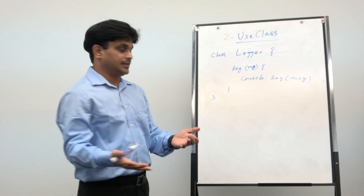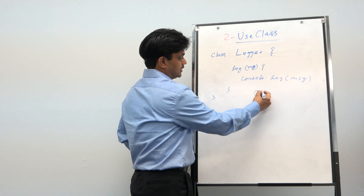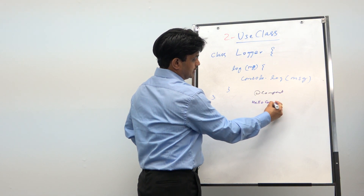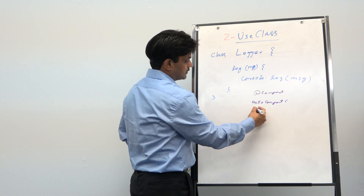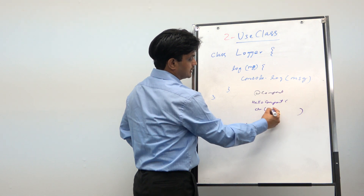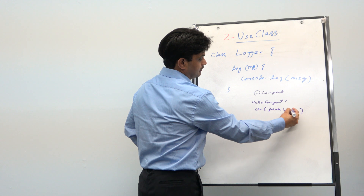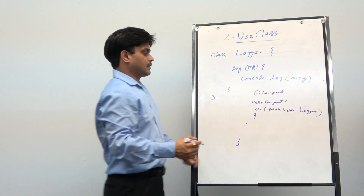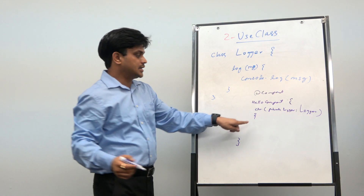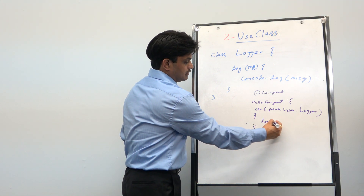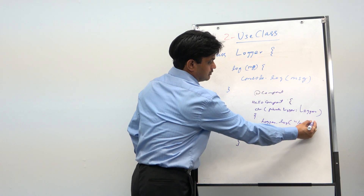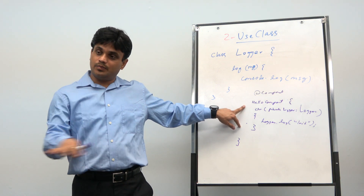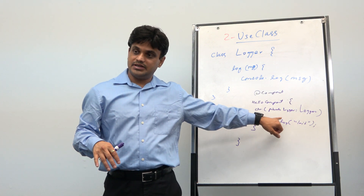All of your components are written like this: for example, a HelloComponent has a constructor where you inject 'private logger: Logger', and then you use it — calling logger.log() to log messages like 'I have initialized myself'. This is one example.